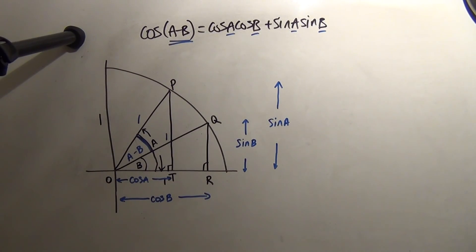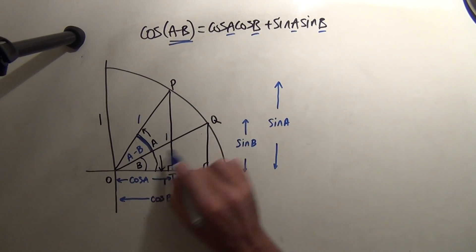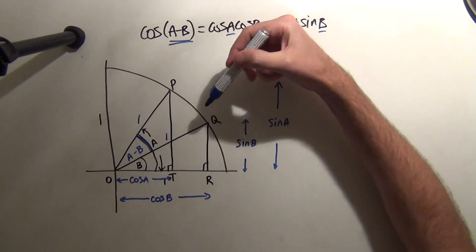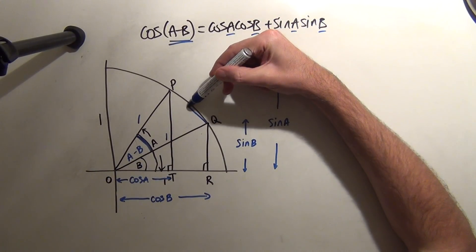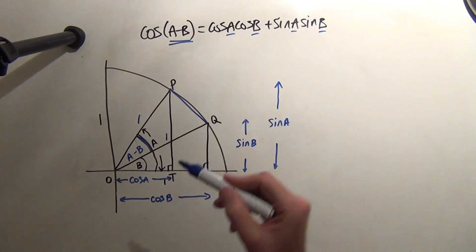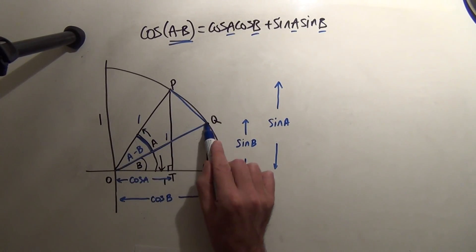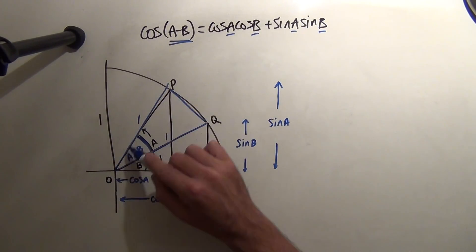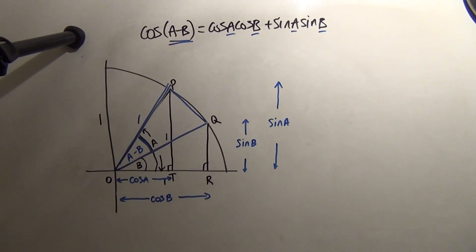Now, we want to somehow get the cosine of A minus B involved, so we want to look at triangle O, P, Q. So I'm going to create a chord here, and then I'm going to be looking at triangle O, P, Q. That's the one I want to look at. So I'm going to have to be looking at the cosine rule in triangle O, P, Q.